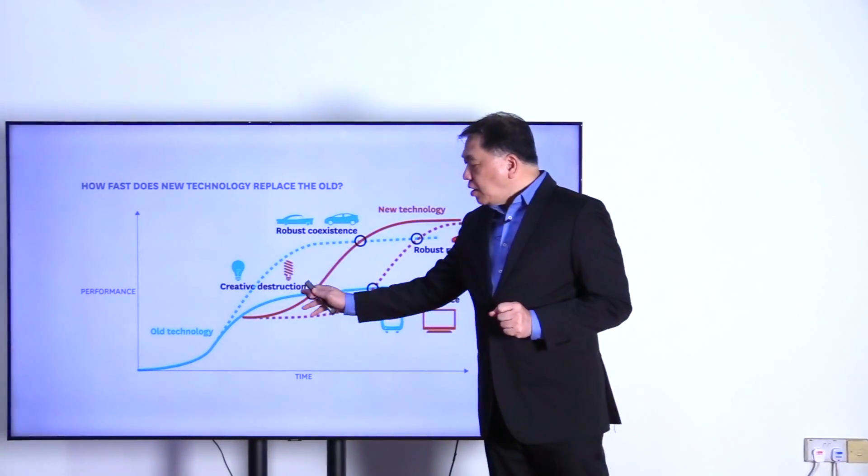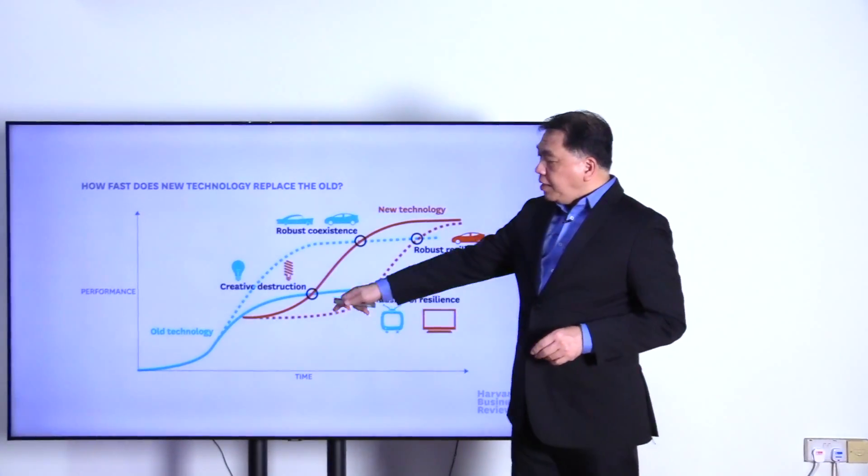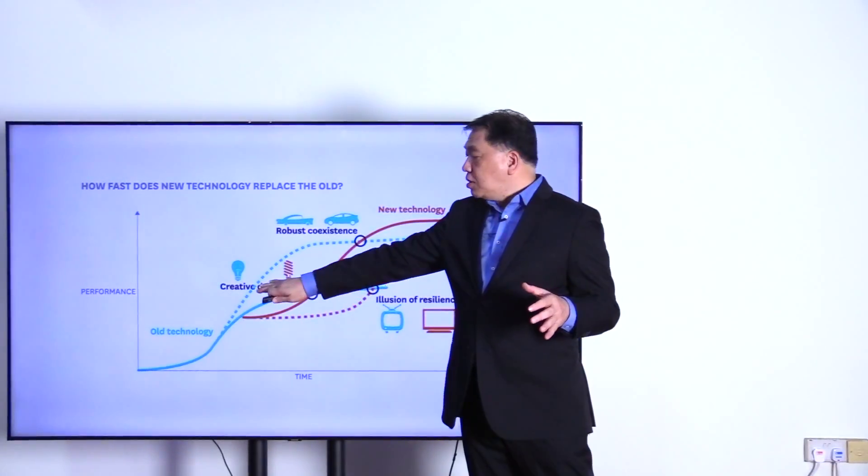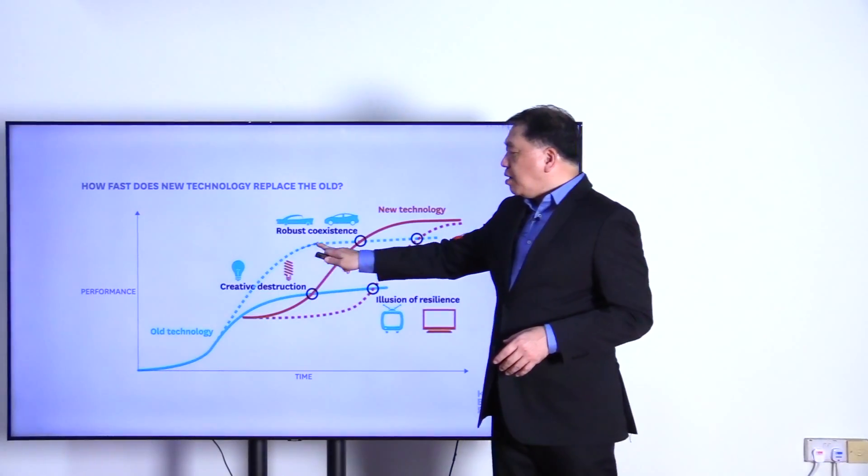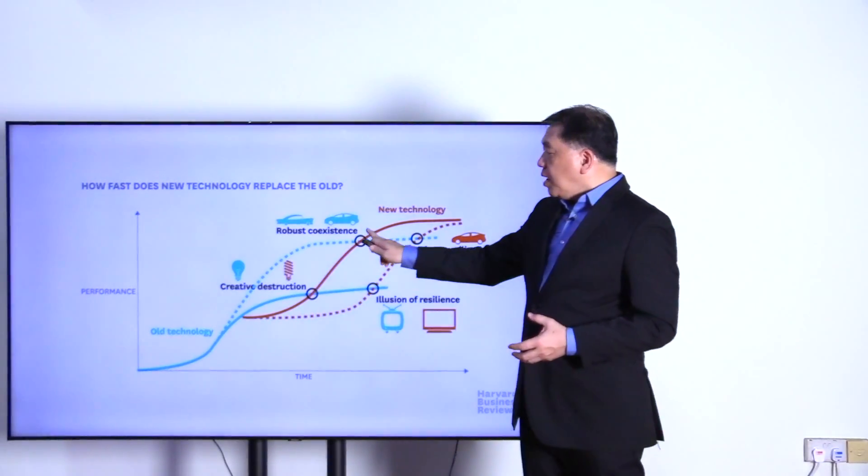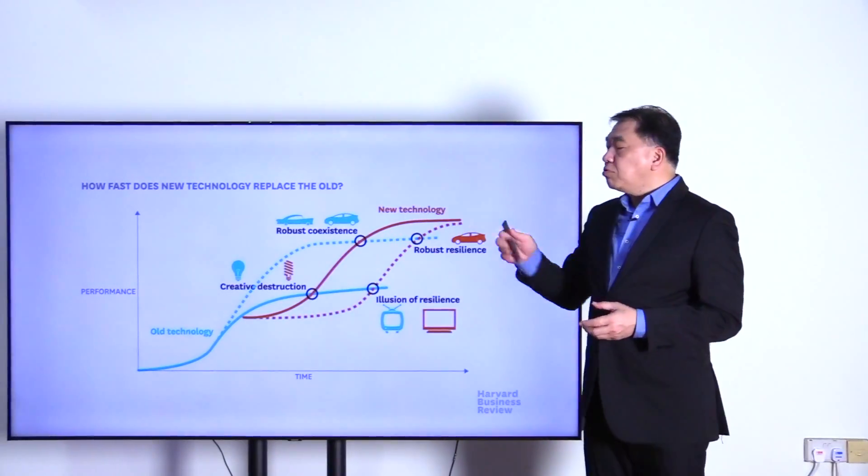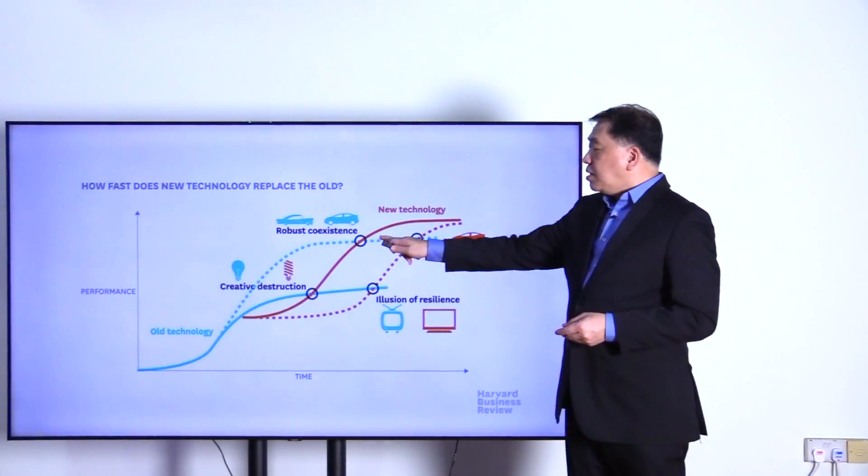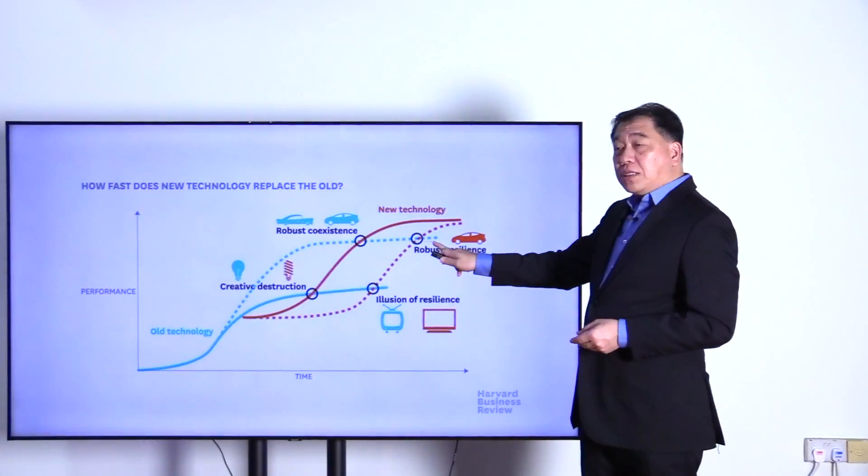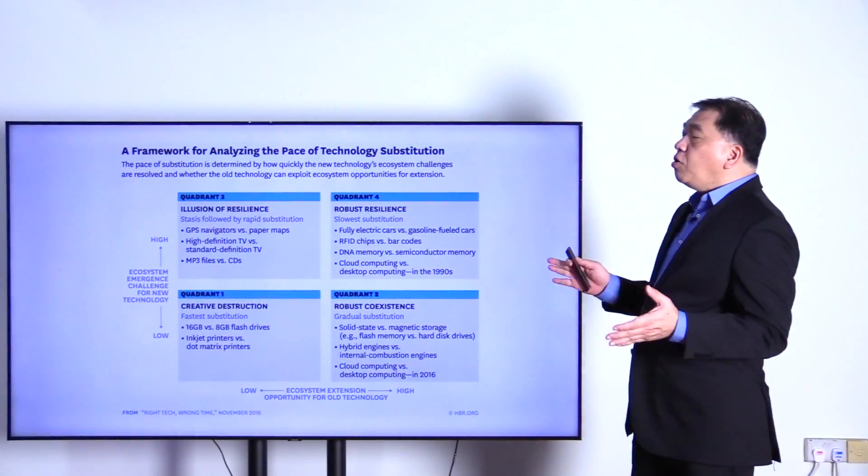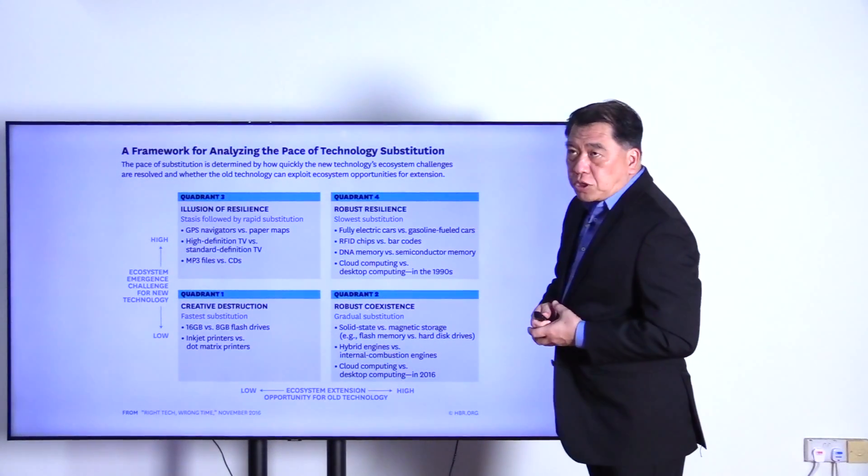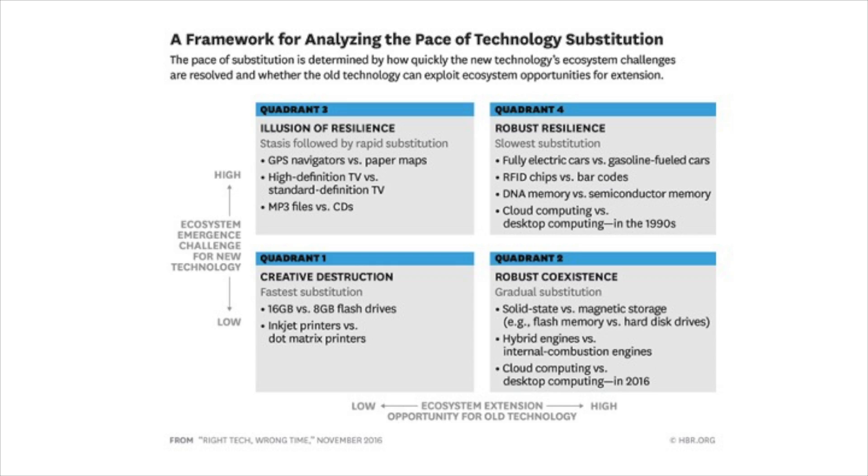There's possible options that when the new S-curve comes in, the existing S-curve, because of the ecosystem, could actually continue to improve its performance by combining other technologies and using the ecosystem. There's robust coexistence where the new technology takes over. The combinations allow us to look at this and maybe stretch a little bit more to have robust resilience. The question is what really exists. Let's look at quadrant one. Quadrant one is the illusion of resilience status followed by rapid substitution.